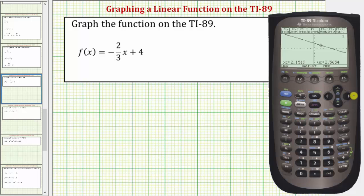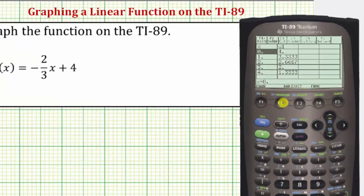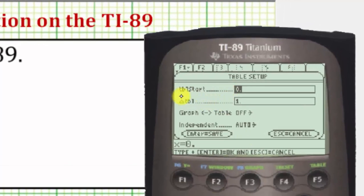To access the table feature, we press diamond F5. And before we scroll up and down on this table, let's take a look at the table set by pressing F2. Notice right now the table start is at zero. The change in the table is by ones, which is typical.